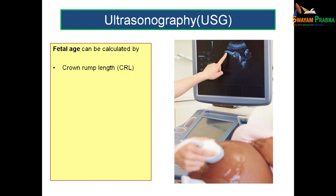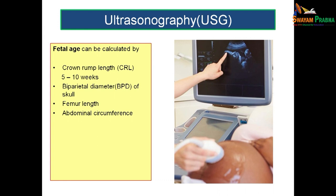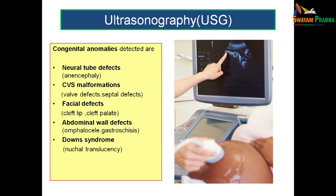Fetal age can be calculated using crown rump length during the 5th to 10th week, biparietal diameter of the skull, femur length, and abdominal circumference. Congenital anomalies detectable by ultrasound include neural tube defects (mainly anencephaly), cardiac valvular and septal defects, facial defects like cleft lip and cleft palate, abdominal wall defects like omphalocele and gastroschisis, and nuchal translucency in suspected Down syndrome.